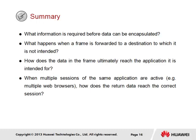How does the data in the frame ultimately reach the application it is intended for? The destination port number in the TCP and UDP headers provides the port information necessary to reach the intended service or application. When multiple sessions of the same application are active, for example multiple web browsers, how does the returned data reach the correct session? Each session will assign a separate source port number that allows the different sessions of the same service to be distinguished. If two web browsers were opened by host A intended for the same HTTP server, each session would show the same destination port of port 80. However, each web session would be represented by a unique source port number on the host, such as 1028 and 1030, enabling the server to distinguish between each browser session.